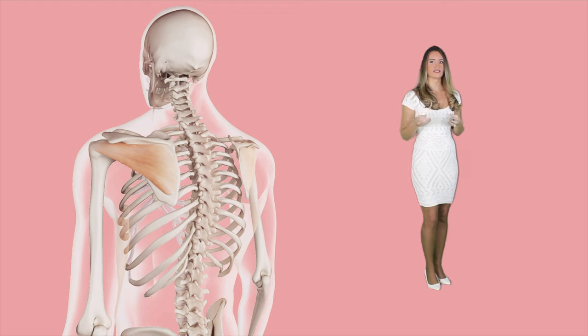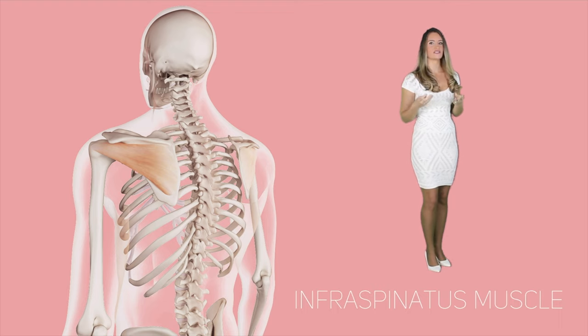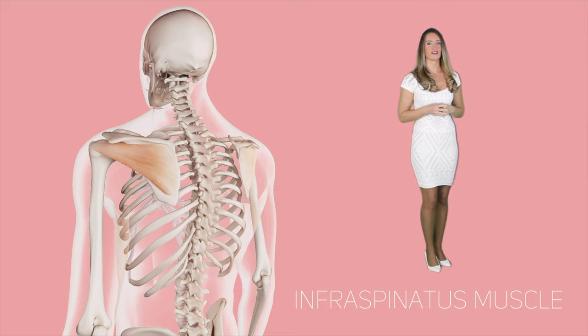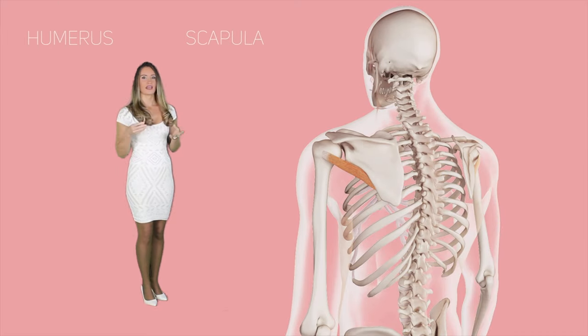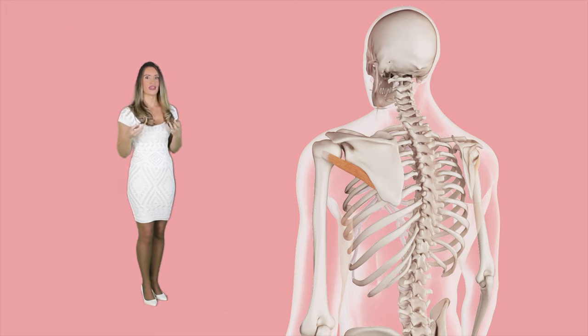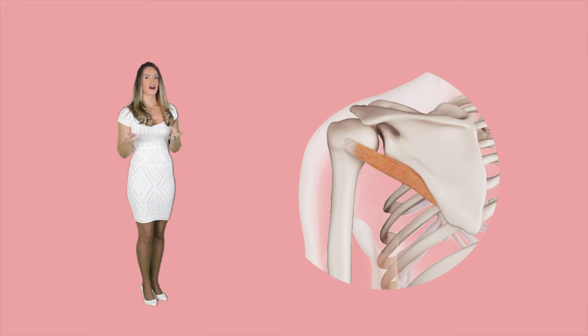Another rotator muscle is the infraspinatus muscle, which attaches to the spine and the humerus, with its contraction leading to the lateral rotation of the arm. The last of the rotator muscles and the last of the shoulder cross muscles is the teres minor, a small muscle that connects the humerus and the scapula. Its contraction with the infraspinatus muscle causes lateral rotation of the arm.